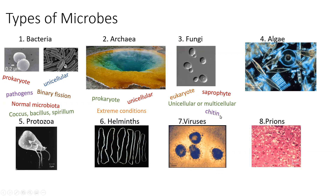That reminds me that I left out a word for bacteria. Bacteria also have a cell wall, but it is not made up of chitin. Instead, it is made up of peptidoglycan. We're going to talk a lot more about that when we discuss types of cells.